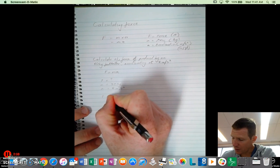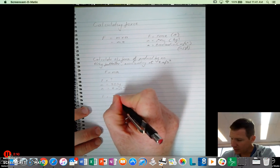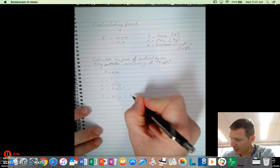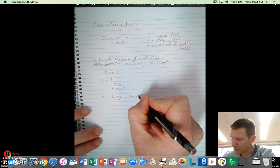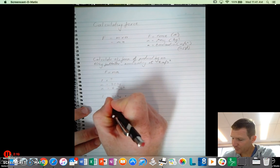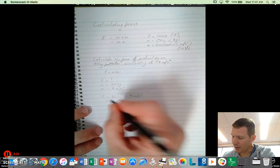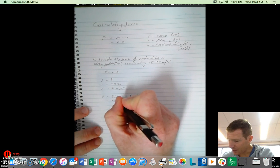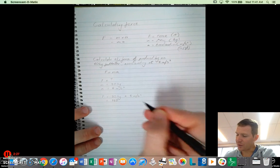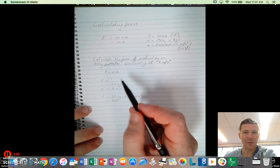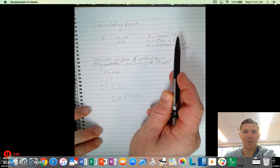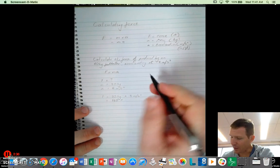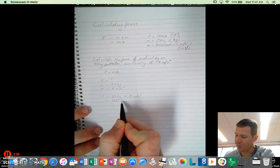So force equals MA, which is 80 kilograms times 8 meters per second squared. All right. So therefore, 8 times 8, 64 out of 0, and we end up with 640. Now if we have a look at the units, what is force measured in? Force is measured in newtons. So we end up with a force produced of 640 newtons.